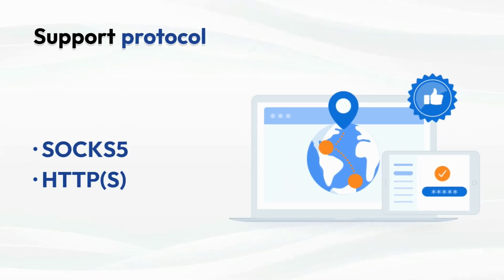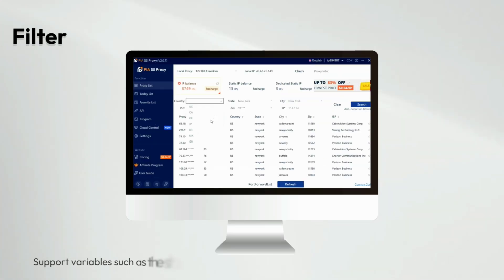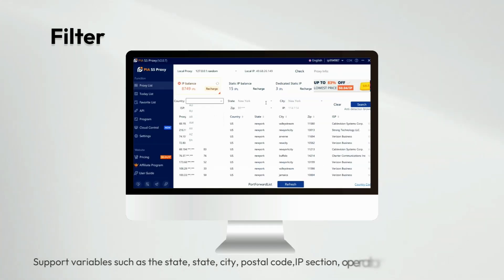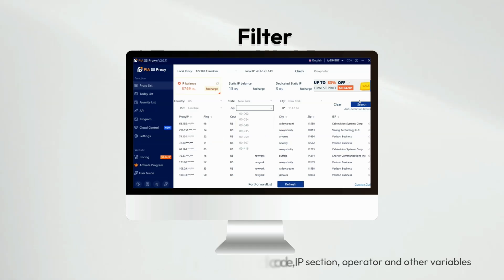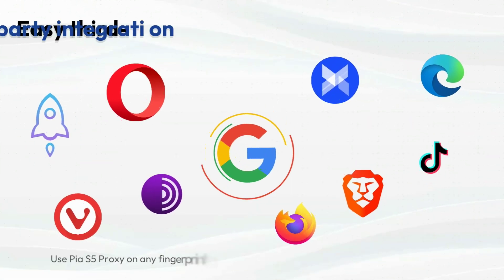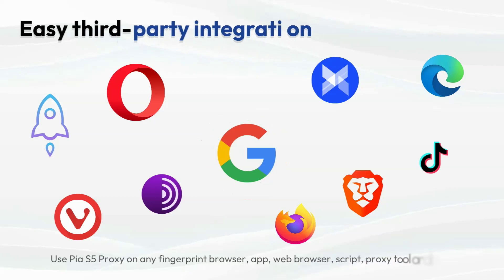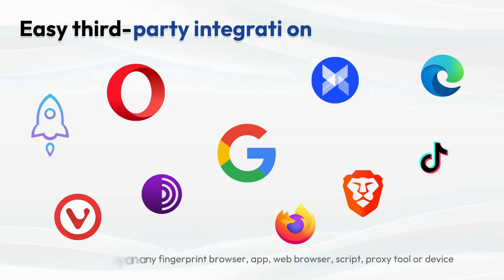PIA S5 Proxy currently supports SOCKS5 and HTTPS protocols, and supports variables such as state, city, postal code, IP section, operator, and other variables. It can be used on any fingerprint browser, app, web browser, script, proxy tool, or device.